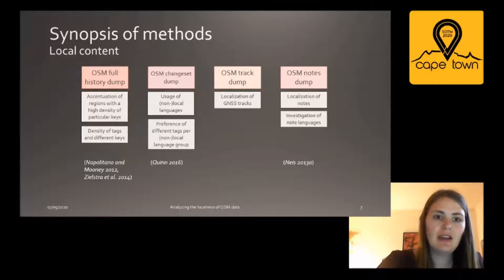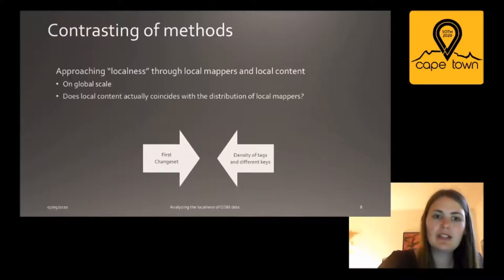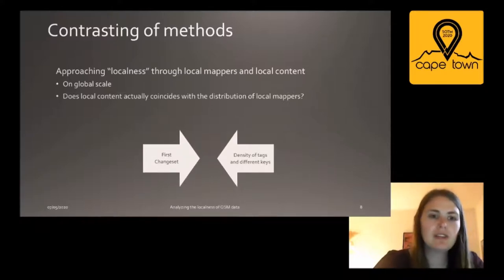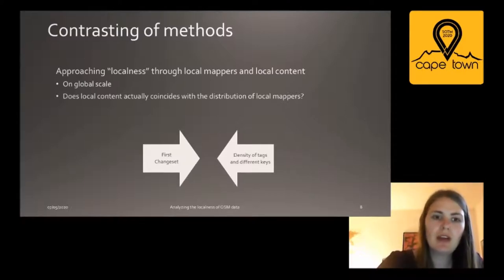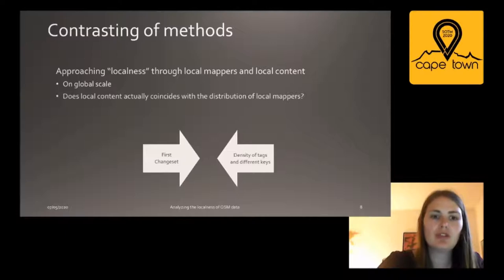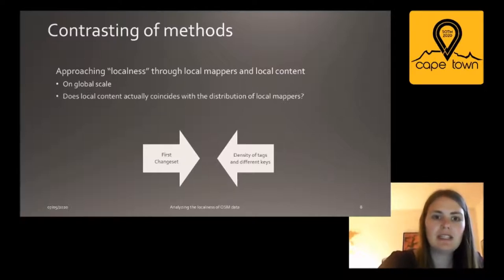Many of these methods work best at regional scale, and only some function for a global comparison. Since other scholars mostly concentrate on either the localness of mappers or the localness of data, we are most interested in contrasting both approaches. We implement two methods that work on a global scale — one focusing on local mappers using the first changeset, and one aiming at identifying local content using the density of tags and different keys per cell. These are approximations and cannot lead to a final answer about what localness is and how to measure it.